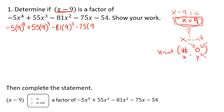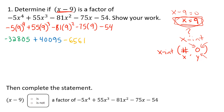Now we're going to use our calculator to do this. Please be careful when you're typing things into a calculator. So when I'm typing the first part in I have negative 5 times 9 to the fourth, which gives me negative 32,805. Then 55 times 9 to the third gives me positive 40,095. Then negative 81 times 9 squared gives me negative 6,561. Then negative 75 times 9 gives me minus 675. And then I have my negative 54.